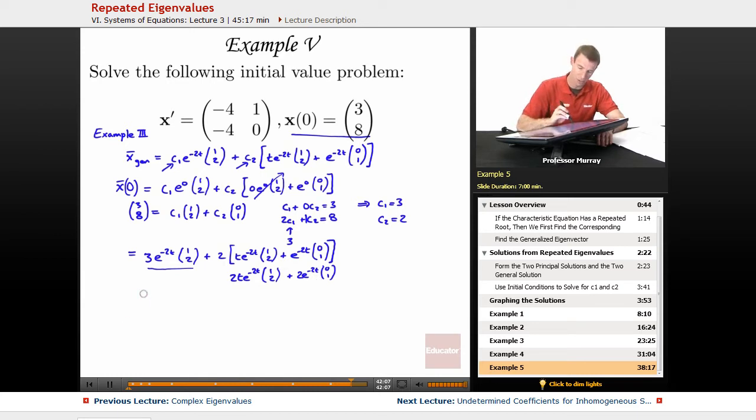And then I can combine my like terms here with the e to the negative 2t's. So, I'll get e to the negative 2t times 3 times (1, 2) and 2 times (0, 1), so just a 3 there. And then on the bottom I've got 3 times 2 and 2 times 1, that's 6 plus 2 is 8, plus t e to the negative 2t. If I multiply this 2 in with this vector, I get (2, 4) there. And that's as simple as it's going to get.